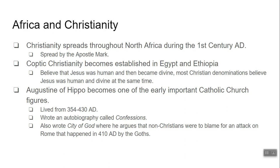Another big Christian figure from Africa was Augustine of Hippo. He becomes one of the most important figures in the early Catholic Church, living in the late 300s and early 400s. He wrote two books: an autobiography called Confessions, where he explains how and why he became Catholic, and a book called City of God, where he argues that non-Christians are the reason Rome was attacked in 410 AD. That is your whirlwind tour of Africa in early history.